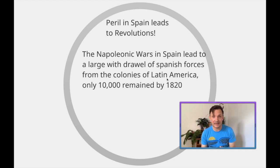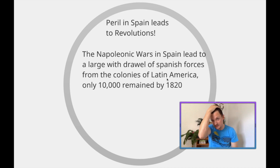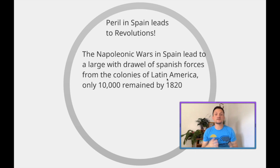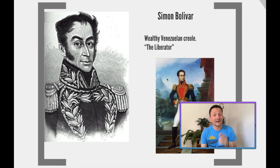The Napoleonic Wars in Spain led to a huge withdrawal of Spanish forces. Since all these Spanish troops were being pulled out and sent to Europe to fight Napoleon, the colonies were left with far fewer defenders. In 1820, only 10,000 Spanish troops were left — and there are a lot more Creoles than that. The Creoles used this as an opportunity to fight back.